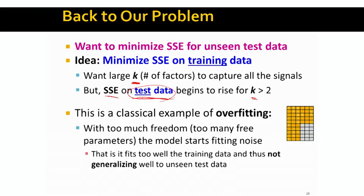Overfitting means that the model is adapting itself too much to the training data. The model has too many free parameters, and those free parameters start to fit noise, so the model has trouble generalizing to the unseen test data. The model is overfitting too much on the training data and doesn't generalize to the unseen data. We have a very complex model fed to the data with so many degrees of freedom that it easily starts fitting the noise, and by fitting the noise, the model loses its generalization ability.